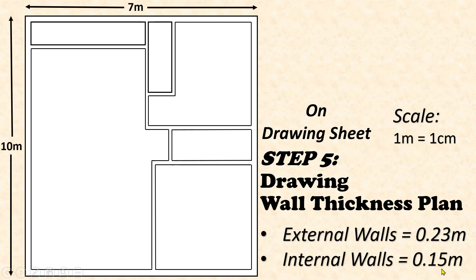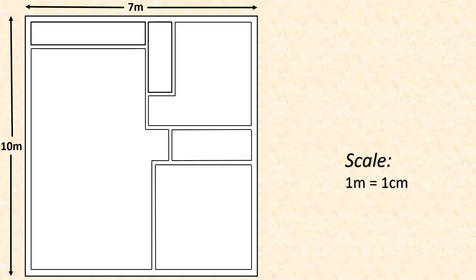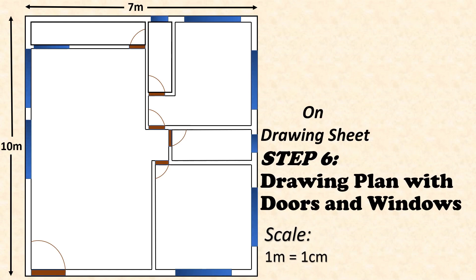Step number six is drawing walls with doors and windows. Based on our scale, after deciding the length of the doors and windows, we need to show this on the wall thickness in this way.